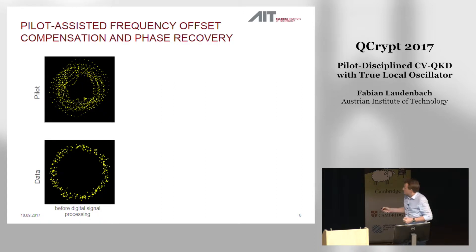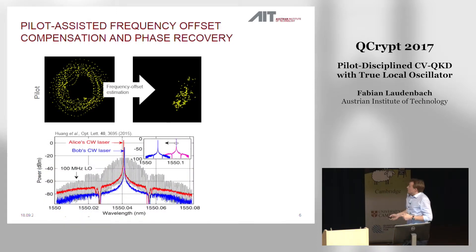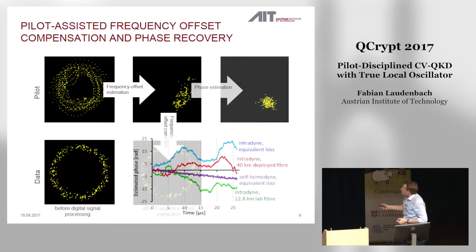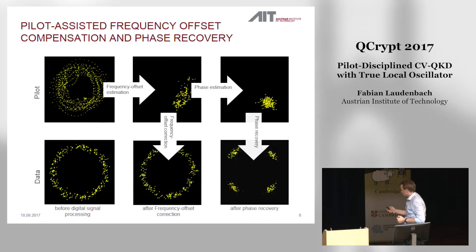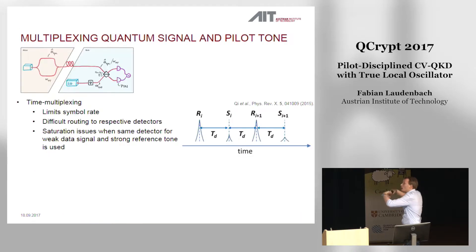So this would be Bob's raw measurements of the pilot tone and the quantum signal. You can see the pilot tone rotates rapidly — this is due to a slight frequency offset of the signal and the local oscillator. Bob's first step is to estimate the frequency offset between the two lasers and compensate for it. The next step is to get an estimate of the relative phase between his laser and Alice's — this is the phase estimation. By phase recovery, Bob is able to recover the signal states as Alice has sent them. This is all done post-measurement.